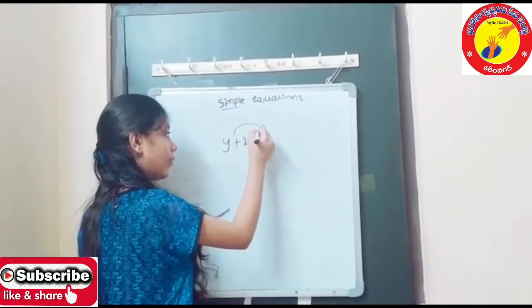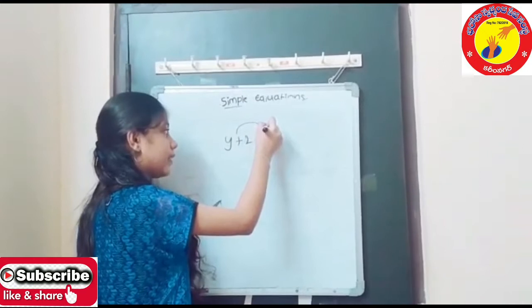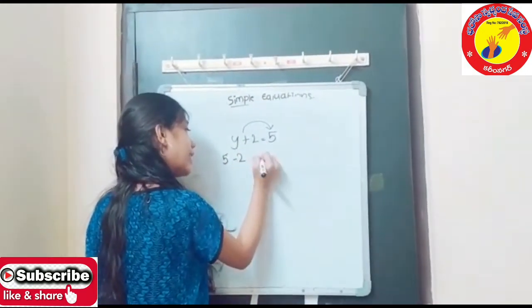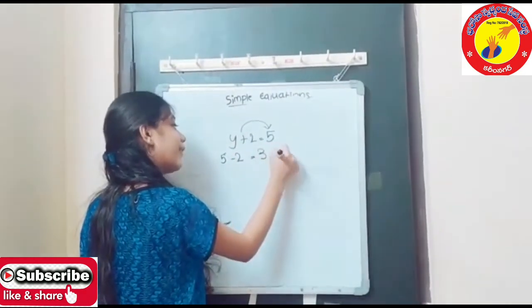Here we got plus. We have transferred this to RHS, so it becomes minus. 5 minus 2 is equals to 3. We got Y is equals to 3.